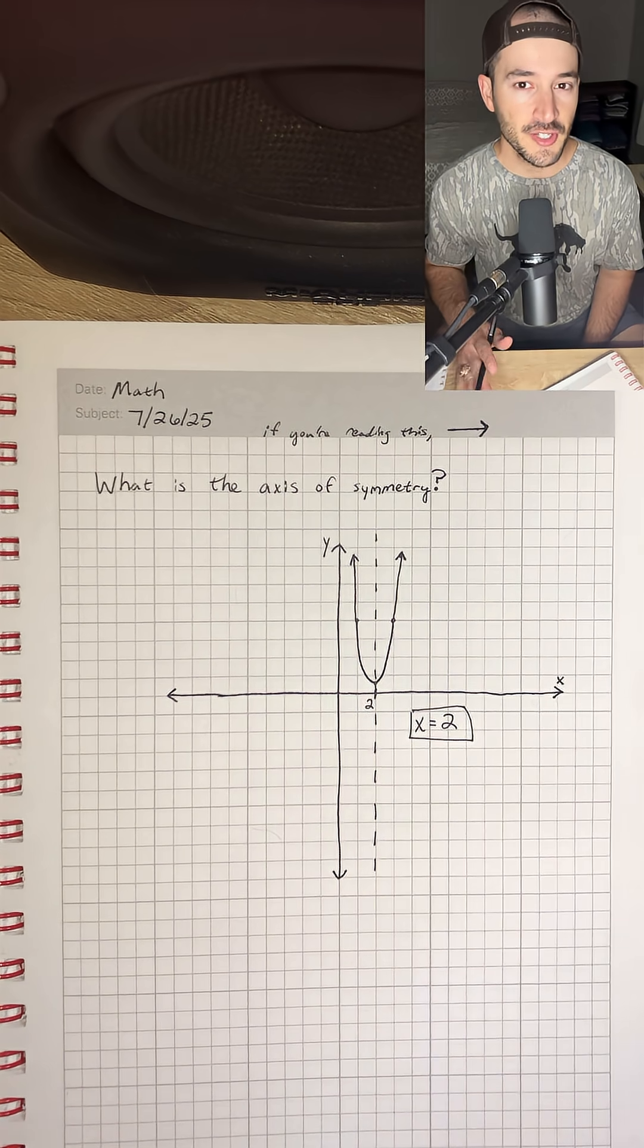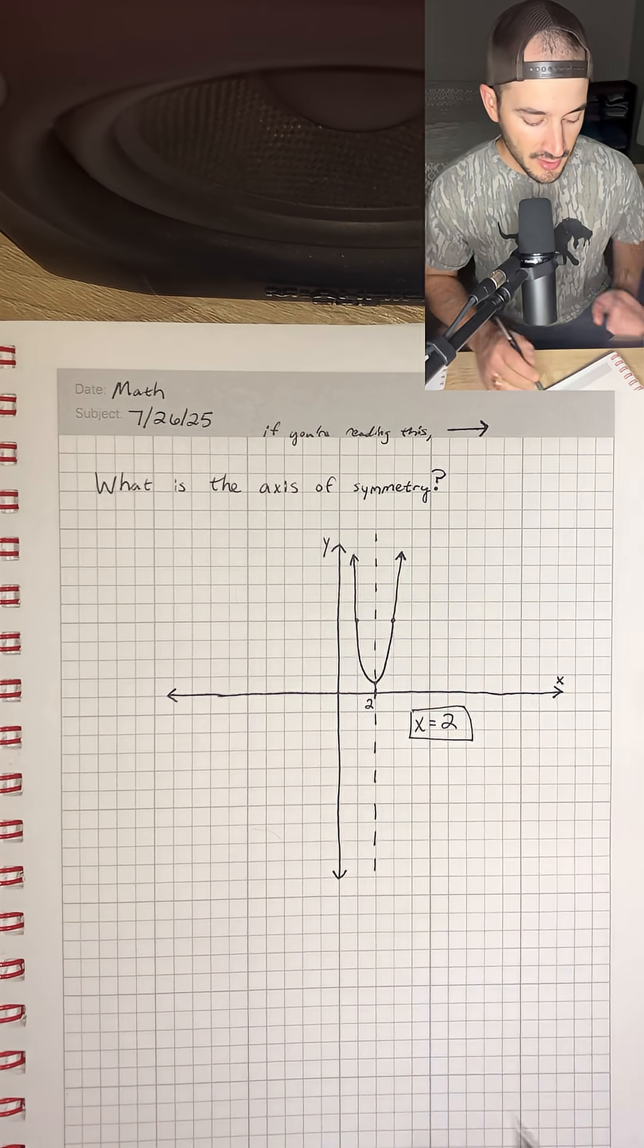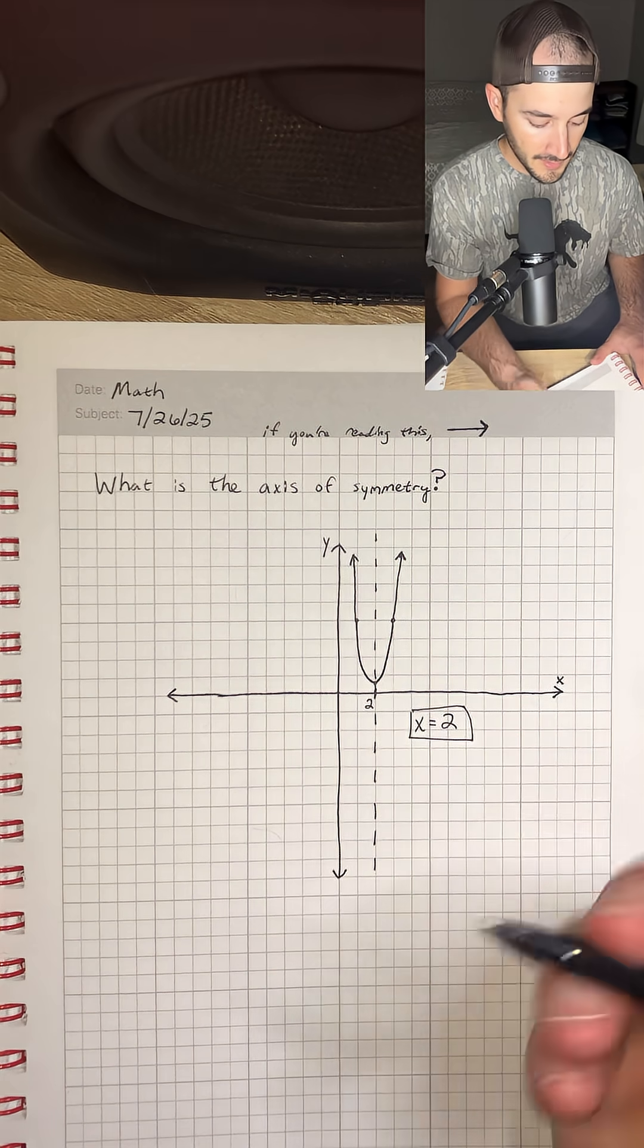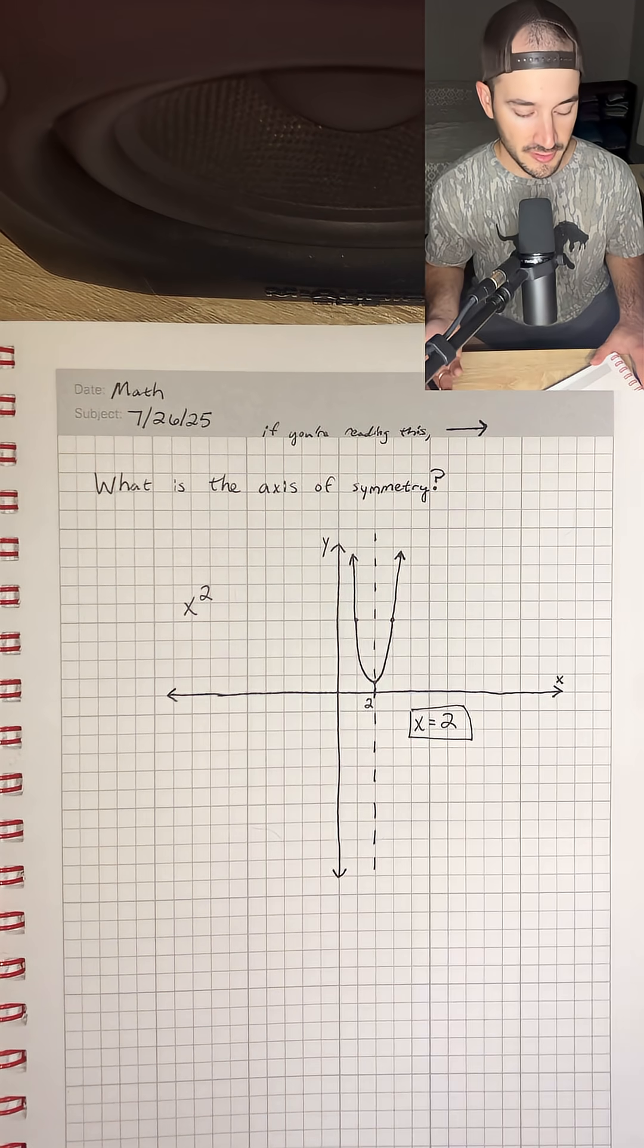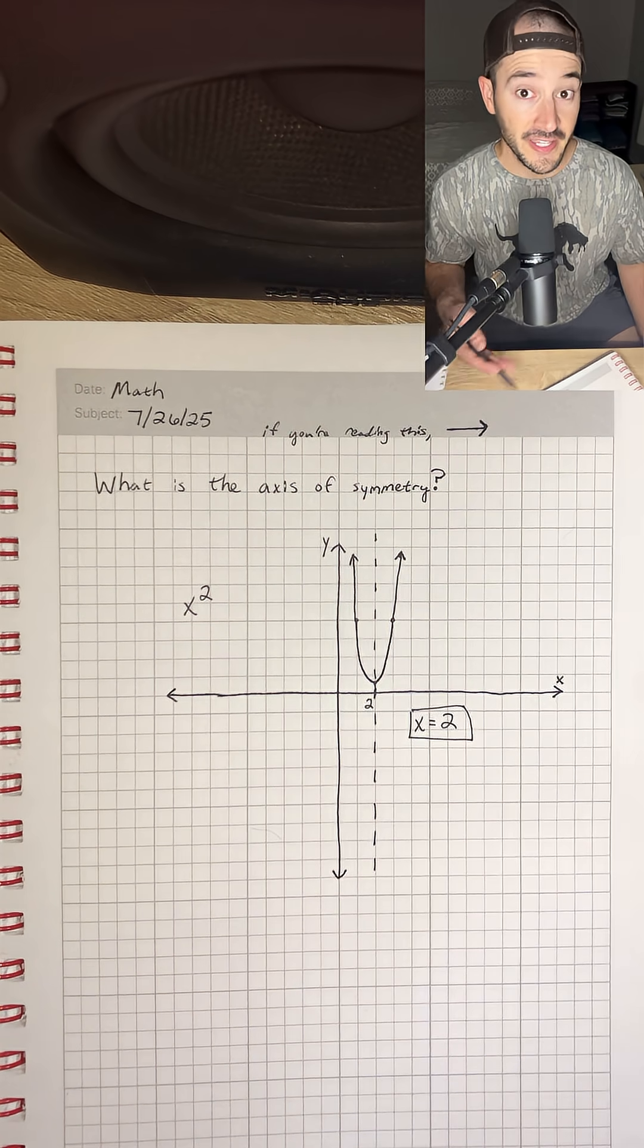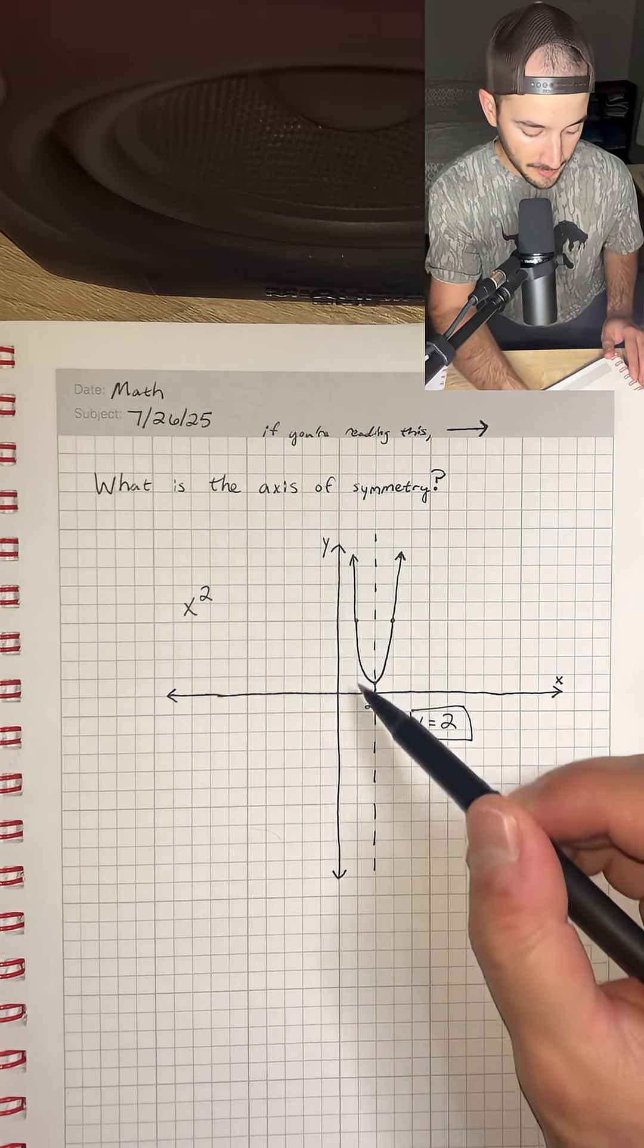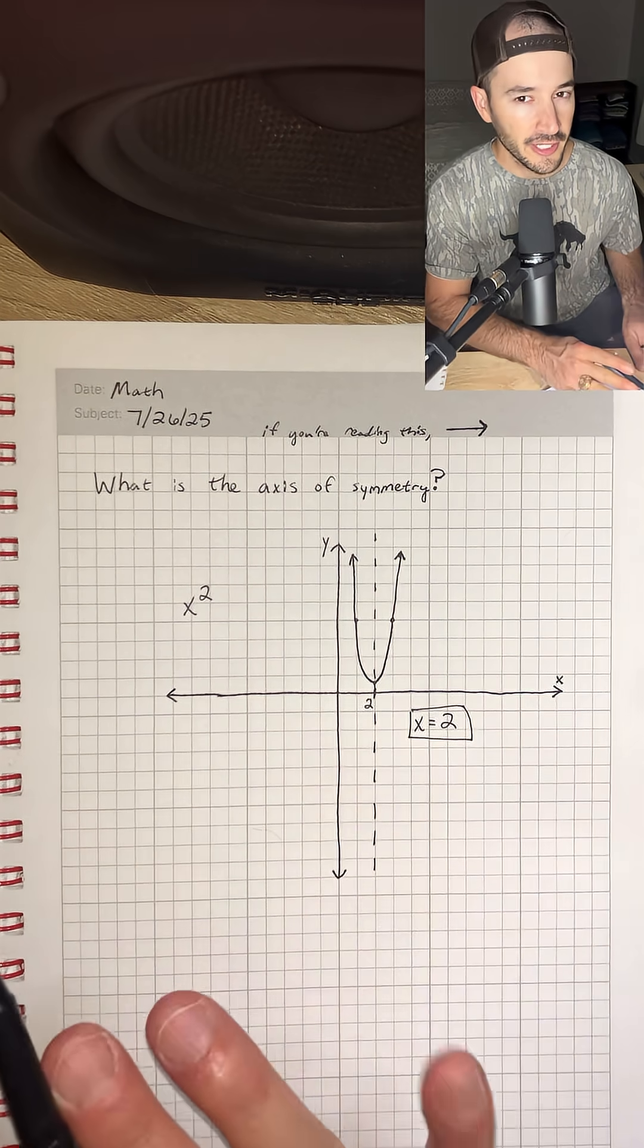Now just a couple more things you might need to know about parabolas. So usually if you see a parabola like this, that means that we have x squared somewhere in the equation. That means if we found the actual equation for this parabola itself, there would be an x squared somewhere in it.